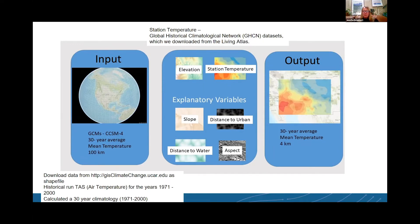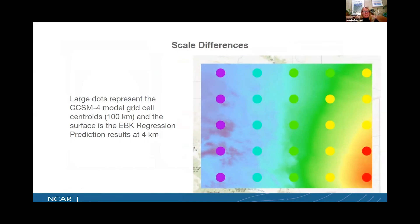That temperature information from the stations we were able to get from the Living Atlas. We grabbed that from the Global Historical Climatological Network dataset. Through running this tool a number of times with different combinations of those explanatory variables, we then generated a number of outputs, which were 30-year average mean temperature data at four kilometers. Our whole process went from those large dots representing the CCSM model grid data, which is at 100 kilometers, and then underneath that is the surface data that we generated at four kilometer resolution.